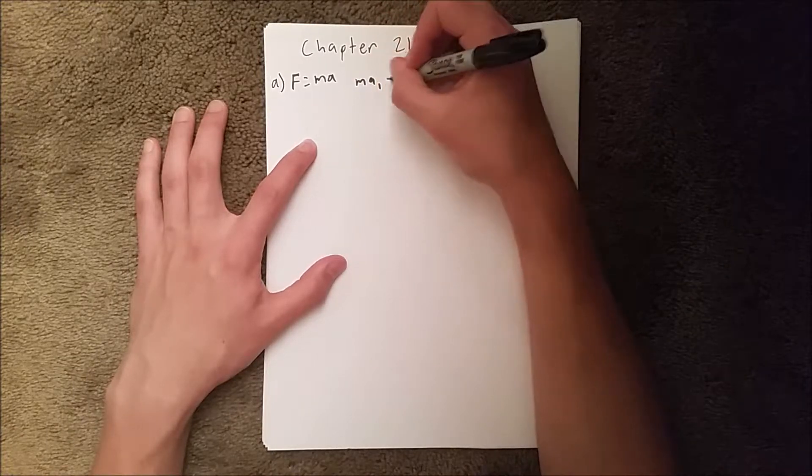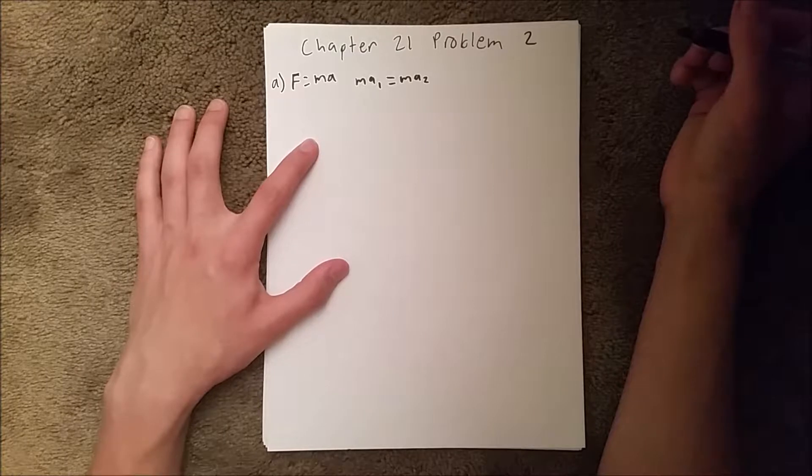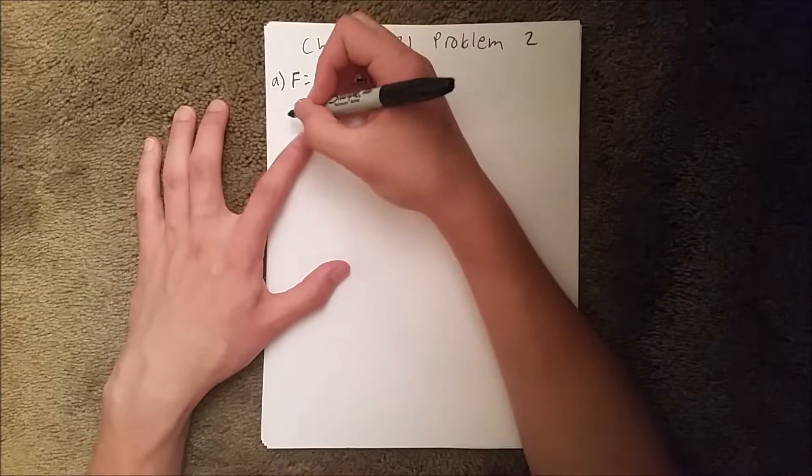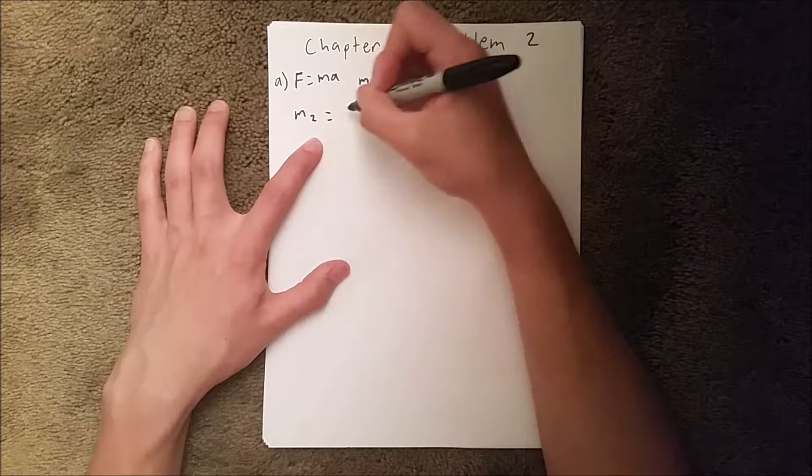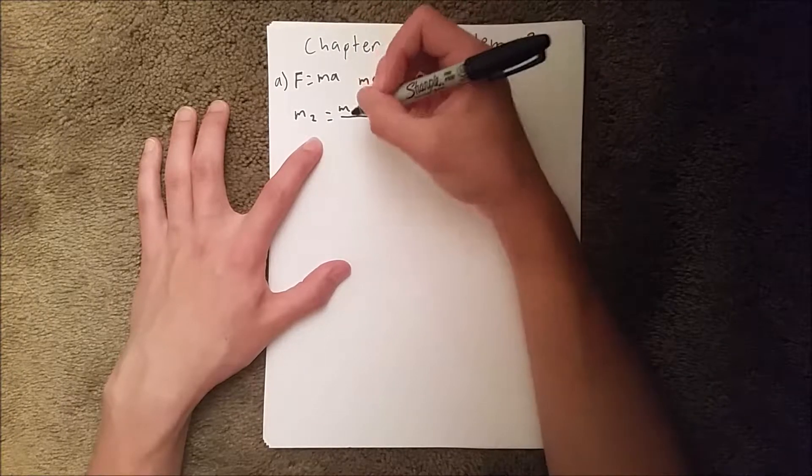So that means m₁a₁ equals m₂a₂. Then we can rearrange this to say mass 2 equals mass 1 times acceleration 1 over acceleration 2.